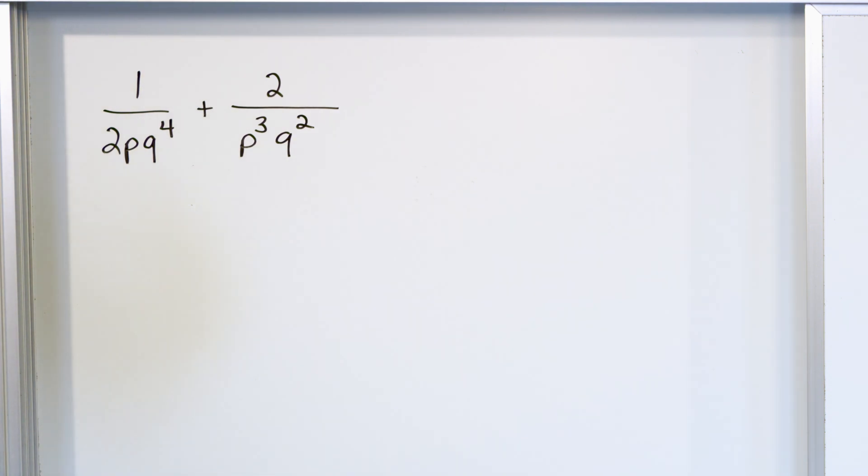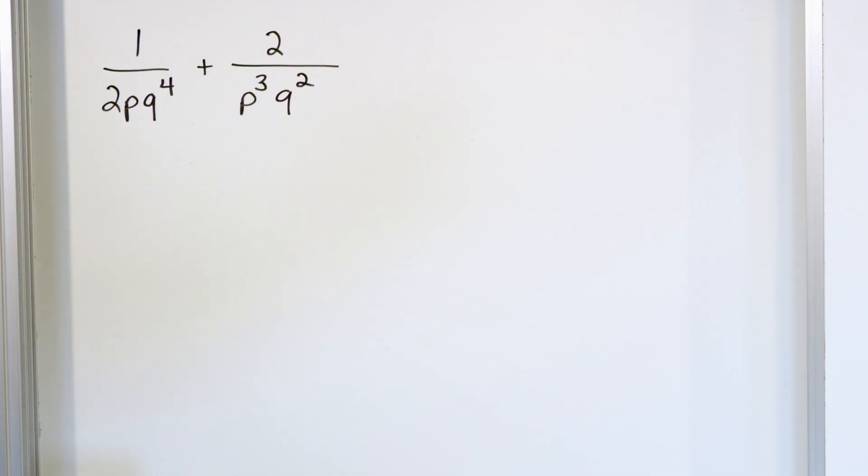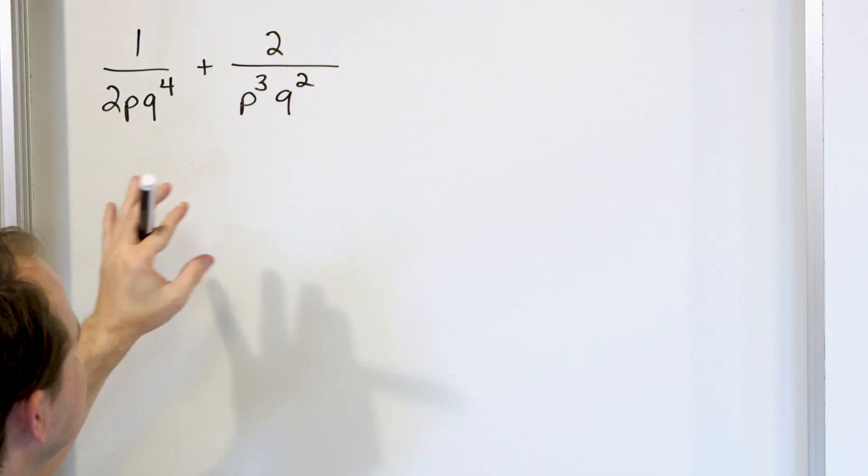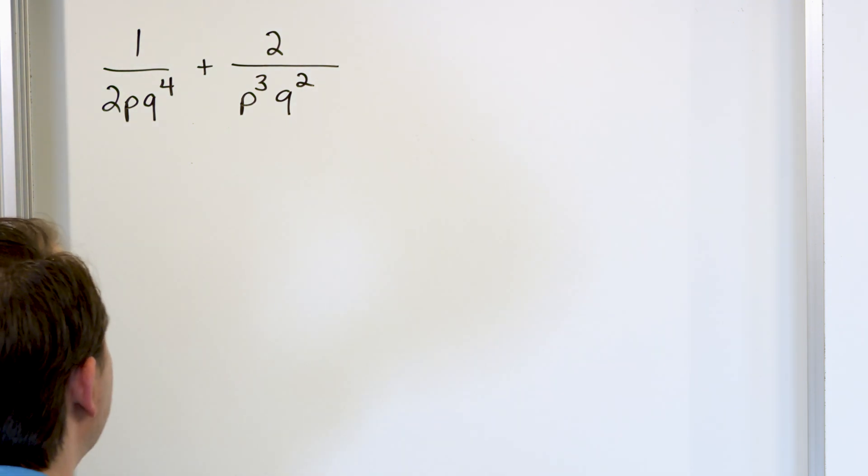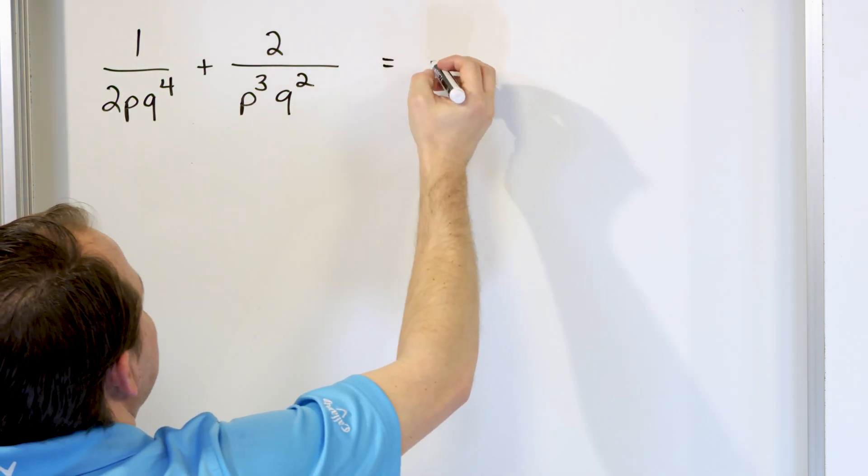Now we have to add these. And if you've watched the last lesson—and you must, I insist that you watch the last lesson before doing this one—you know that we need a common denominator. But you look at this and you say, how am I going to find a common denominator? It looks so crazy. Well, take it one step at a time and it will become second nature after a while.